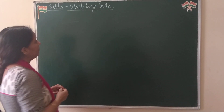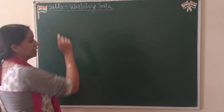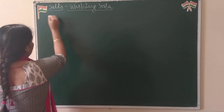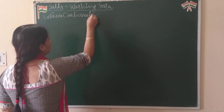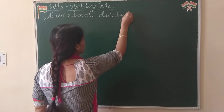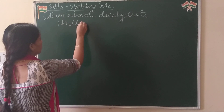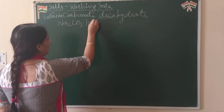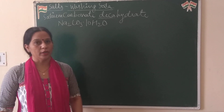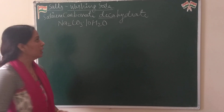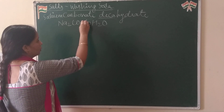We will start with washing soda. Washing soda is the common name of the salt, and its chemical name is sodium carbonate decahydrate. Sodium carbonate is Na2CO3. When any salt contains water molecules, it is present in the form of crystals. So we call it crystals of washing soda when they contain 10 molecules of water in it.